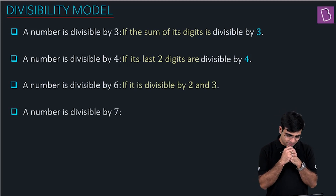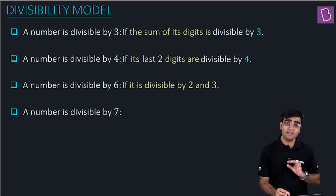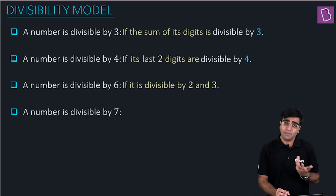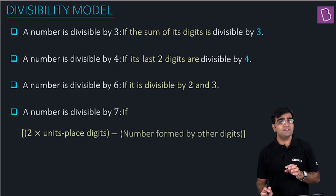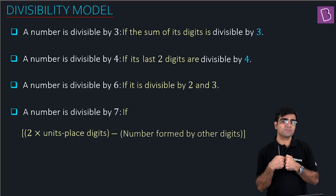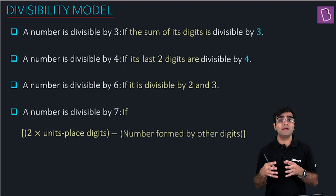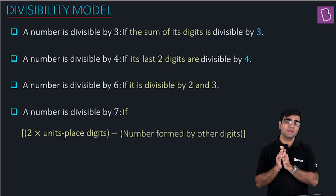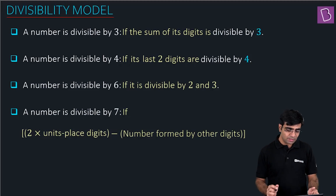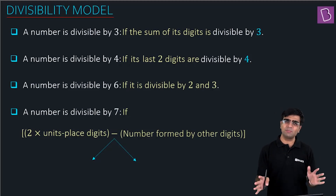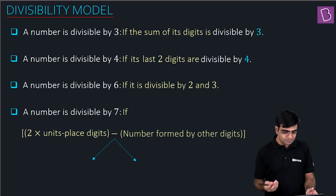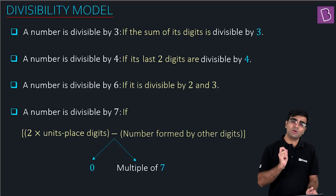Now when I talk about divisibility by 7, there's a rule — it's very simple. I'm sure this will be a bit new to some of you. If a number has to be divisible by 7, you take two times the units digit, then take its difference with the number formed by the rest of the digits. Whenever this quantity is zero or divisible by 7, that number will surely be divisible by 7.